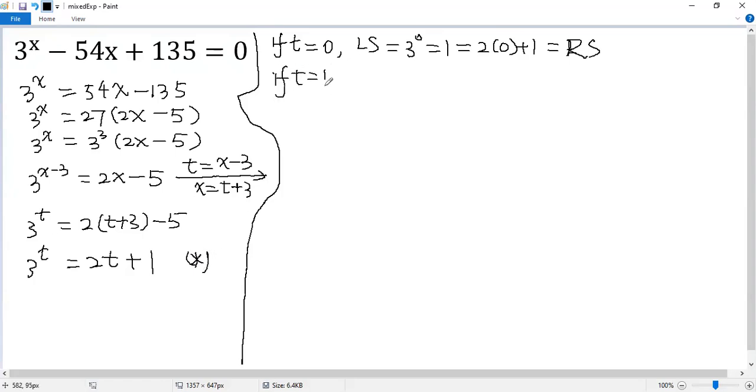If t equals 1, the left side equals 3 to the power of 1, the right side equals 2 times 1 plus 1. That is the right side. So again, t equals 1 is a solution.